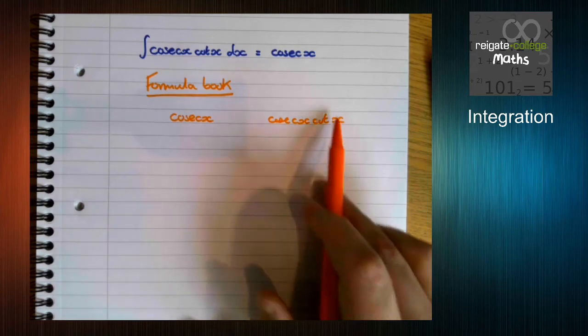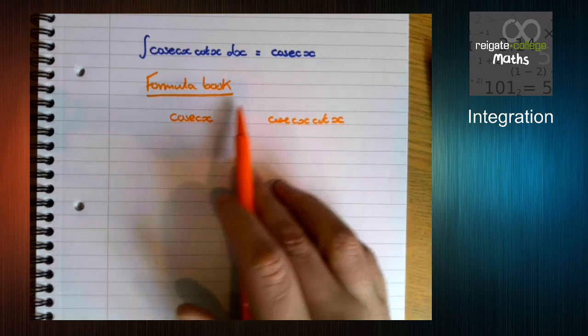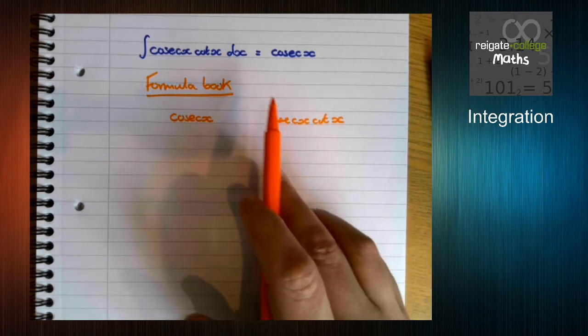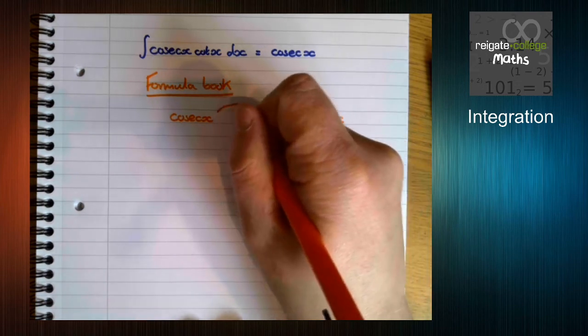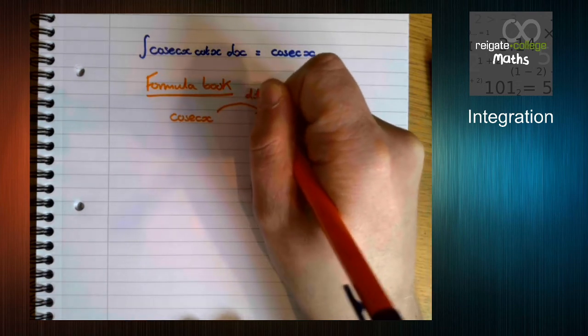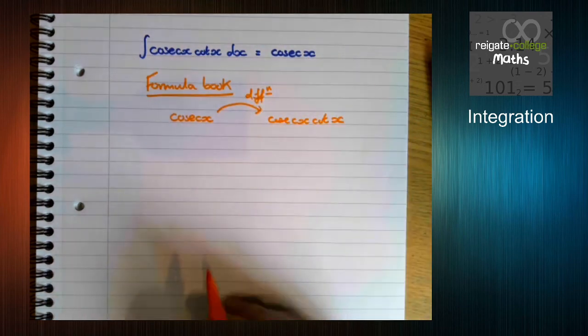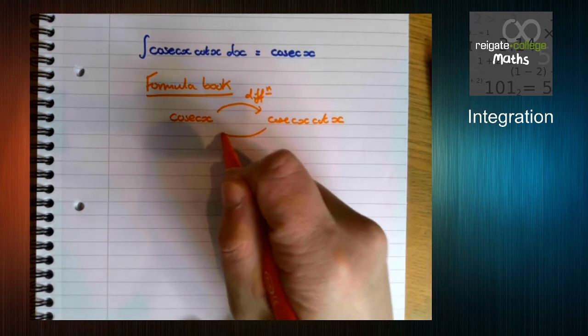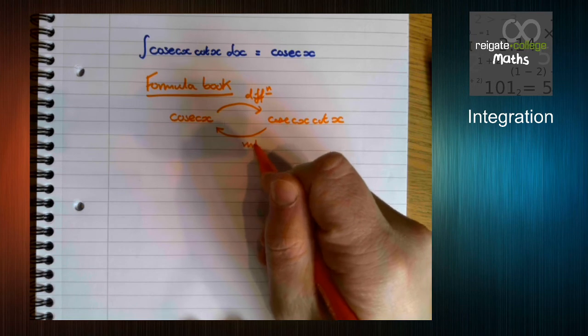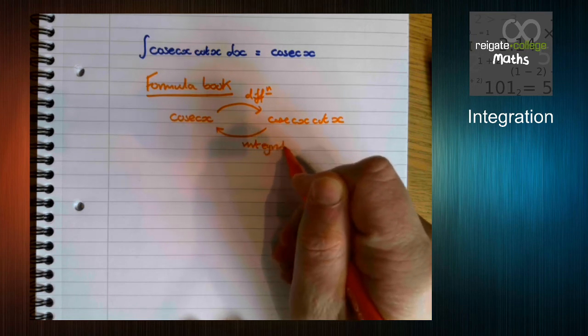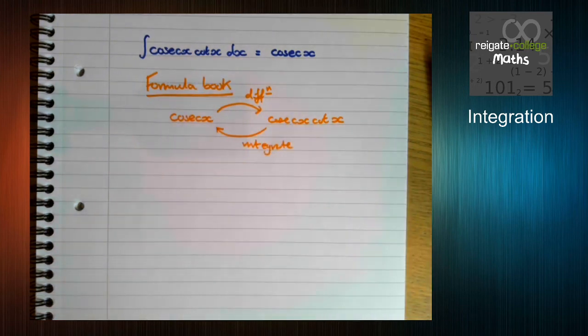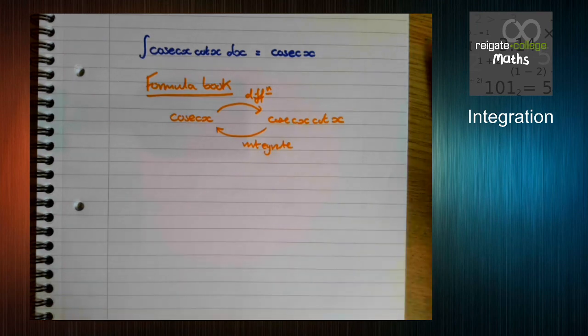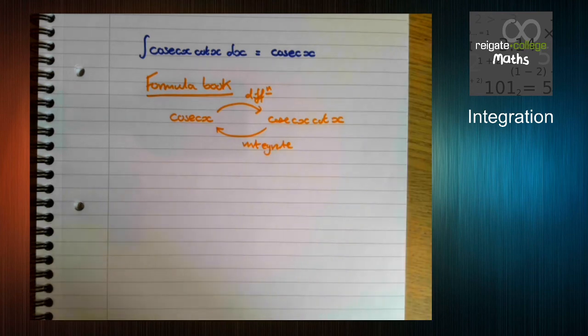So you need, this is what I was saying before, earlier in the video, about the idea of differentiation and integration working backwards. What you're told in the differentiation section of the formula book is this is true. So we can differentiate to get from cosec x to cosec x cot x and we integrate to go backwards.